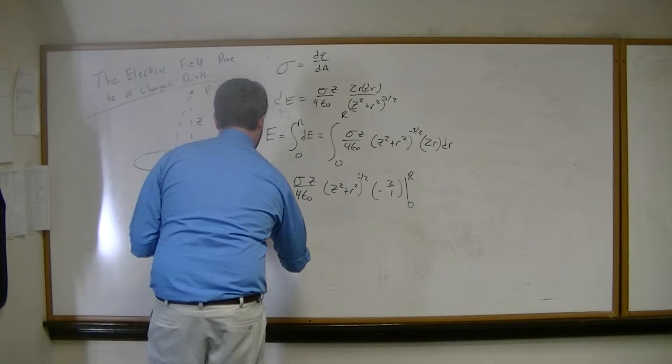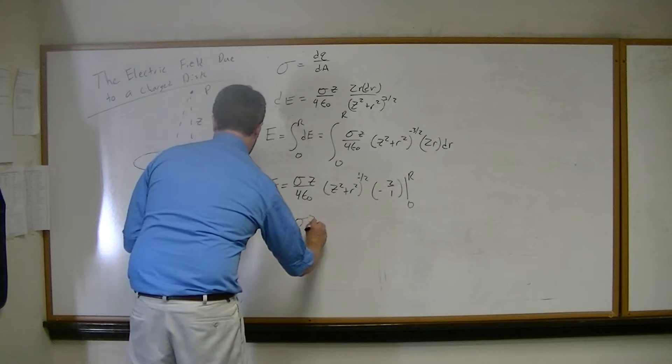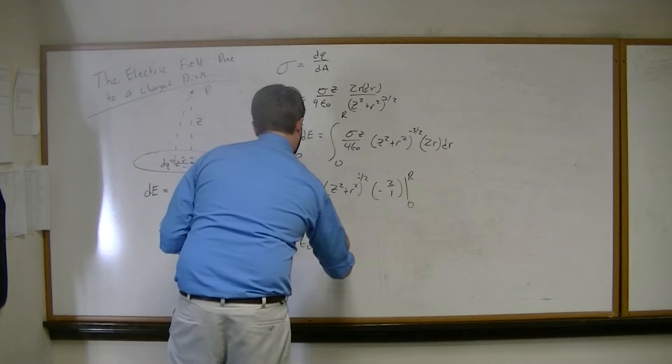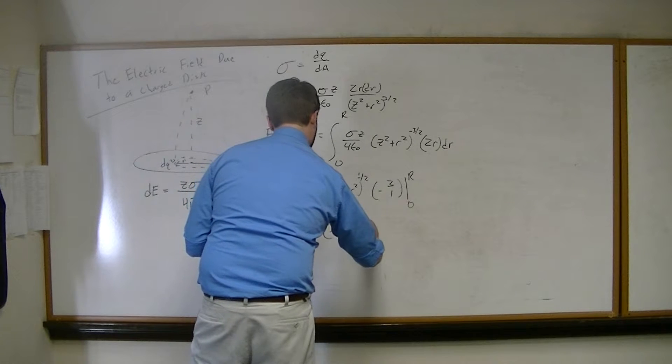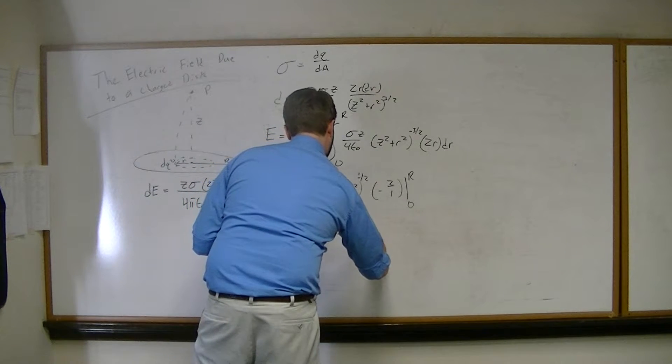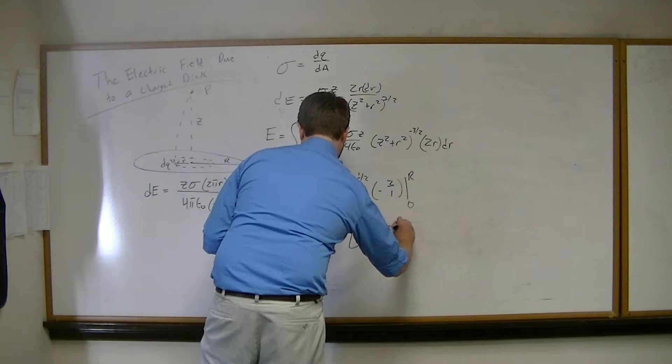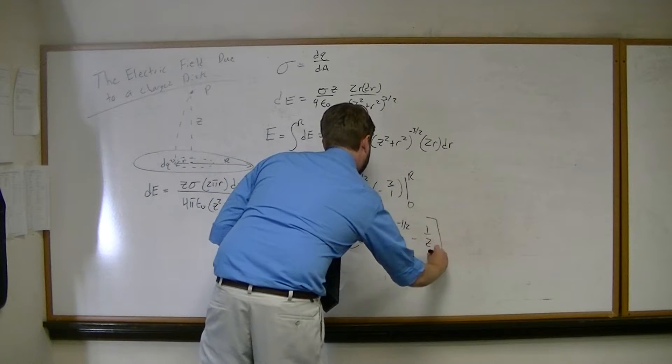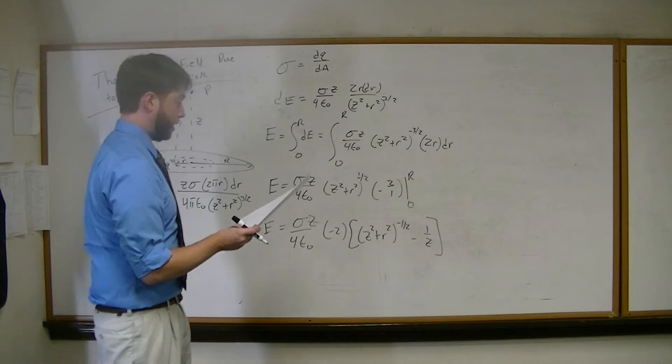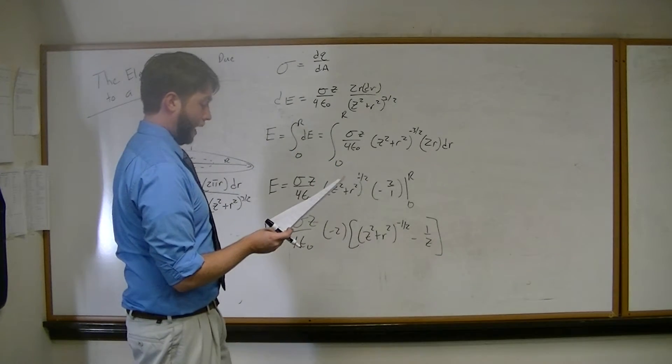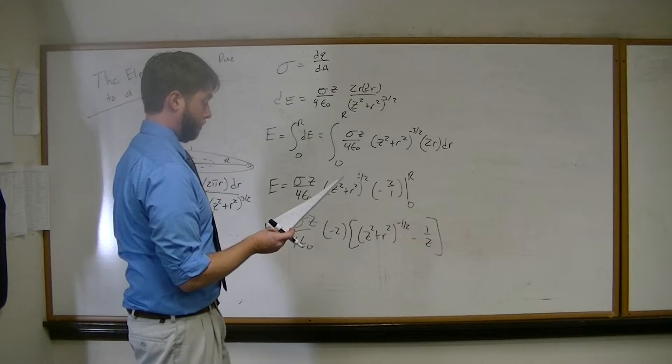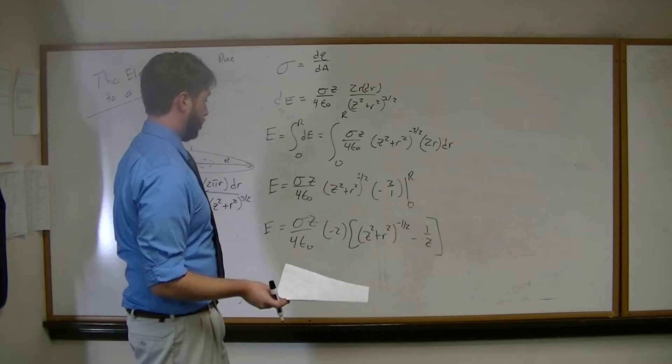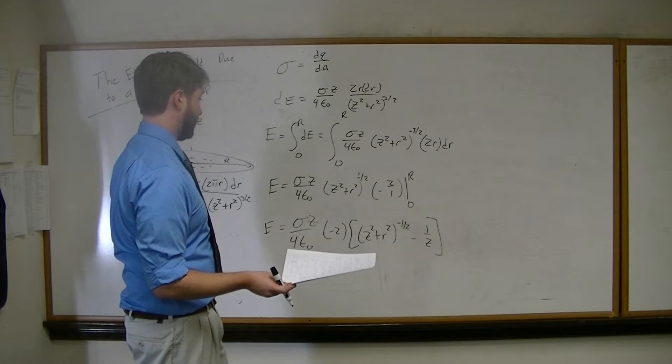Now two more math steps. We have the electric field is equal to sigma z over 4 epsilon naught. Let's put the minus 2 out here. And then we are going to have z squared plus r squared to the minus 1 half minus 1 over z. They want to put it into a nice form that you can easily see. So what we did was we took a negative minus 2 from the z in order to pull it out. Again, this is just a little bit of math manipulation here. You should be able to look at it and see it.